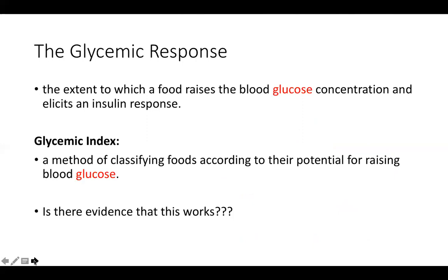The glycemic response measures the extent to which a food raises blood glucose concentration. The glycemic index categorizes foods based on how high they raise blood sugar, with the idea that choosing foods causing slow or lower rises in blood sugar would help manage diabetes. However, there is only moderate evidence that this works, and the relationship between blood glucose and insulin is not always a perfect parallel.